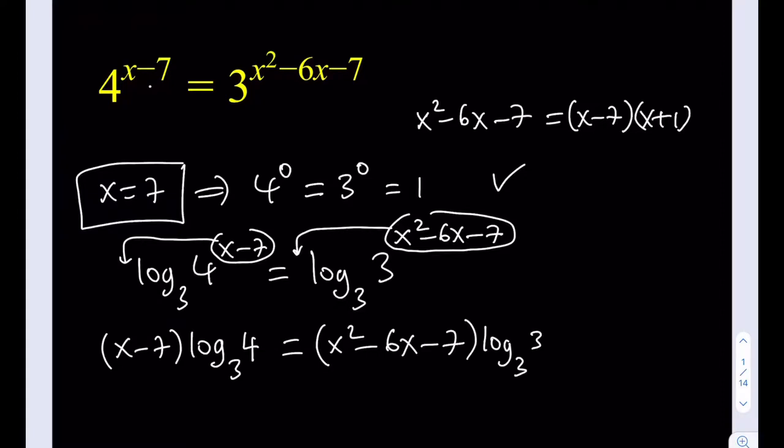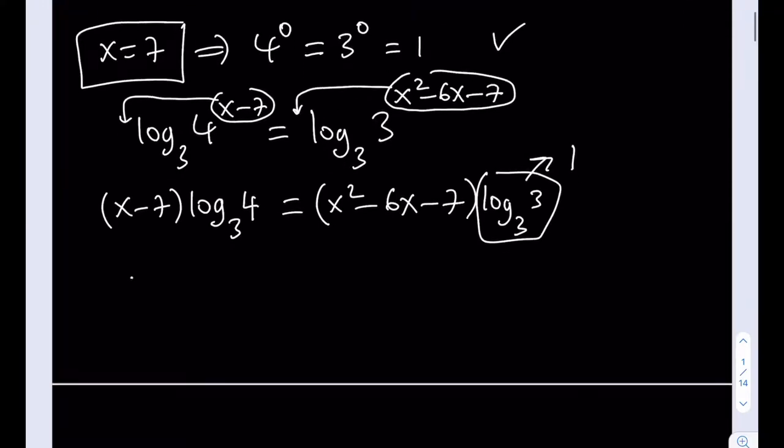Well, we know that this is equal to 1, so this is just going to be 1. So then it's going to equal x squared minus 6x minus 7. Okay, so we have the following equality. x minus 7 times log 4 with base 3 is equal to x squared minus 6x minus 7.